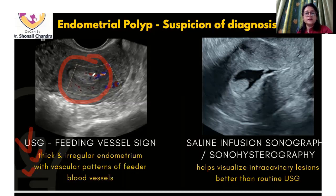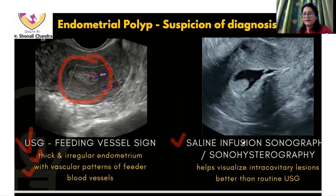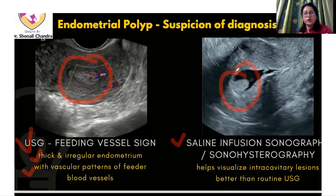As we can appreciate in this figure, the demarcation of the polypoidal mass is not very distinct. To overcome that, we can use saline infusion sonography or sonohysterography. What we do is fill the uterine cavity with saline and then do the ultrasound. The saline looks black on ultrasound, and any mass or lesion protruding inside the uterine cavity will then look very well demarcated against that black background. Saline infusion sonography helps to visualize intracavitary lesions better than routine grayscale ultrasound.